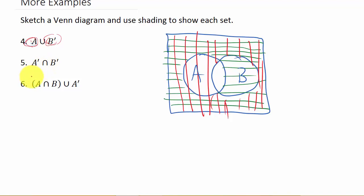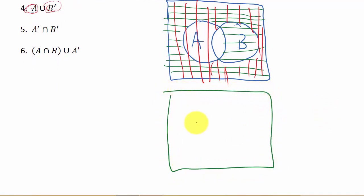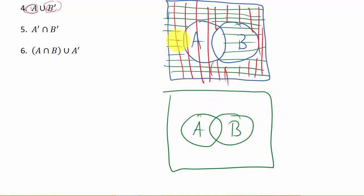Now we need the intersection of these two sets. The intersection is where the lines cross. Everything gets shaded except for inside both circles, because the lines don't cross inside either circle — the only place they cross is outside both. This is a good example where you'd want to draw the diagram again, because otherwise you'd have to erase the interior shading.